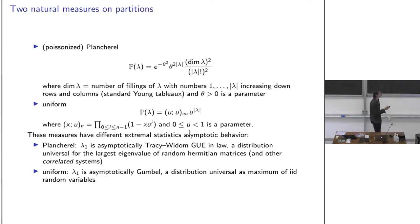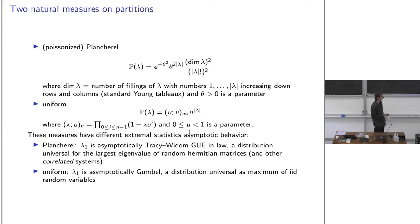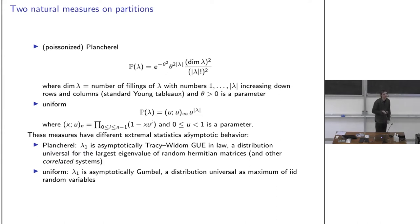The interesting thing about the Plancherel measure is that the extremal statistic λ₁ is asymptotically Tracy-Widom. These two distributions — Gumbel and Tracy-Widom — couldn't be more different: one is very complicated, universal for correlated systems like eigenvalues of Hermitian random matrices; the other is simple and universal for maxima of i.i.d. random variables.